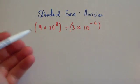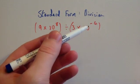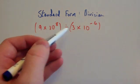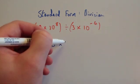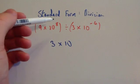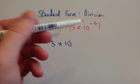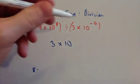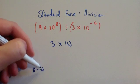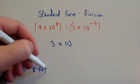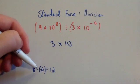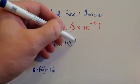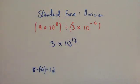Now this time we've got 9 times 10 to the power of 8 divided by 3 times 10 to the minus 4. So we're going to do the division for the numbers at the front. So 9 divided by 3 is 3. And you get 10 to the power of 8 divided by 10 to the power of minus 4. So remember you're going to take away the powers. You're going to get 8 take away minus 4. Well 8 minus minus 4 would then be 12. Remember whenever you've got two negatives directly beside each other you add. So it's 8 plus 4 which is 12. So this would be 3 times 10 to the power of 12.